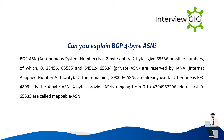Can you explain BGP 4-byte ASN? BGP ASN is a 2-byte entity. 2 bytes give 65,536 possible numbers, of which 0, 23,456, 65,535 and 64,512 to 65,534 are private ASNs reserved by IANA. Of the remaining, 39,000 plus ASNs are already used. RFC 4893 defines the 4-byte ASN. 4 bytes provide ASNs ranging from 0 to 4,294,967,296. The first 0 to 65,535 are called mappable ASNs.